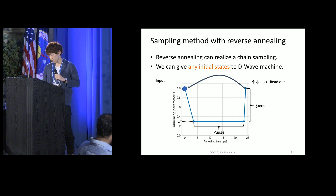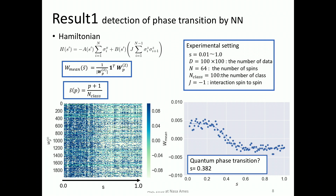This is the first result. This is the Hamiltonian we train on now. A(S) and B(S) are the energy scales of the machine. This is the new order parameter based on the neural network. We sample spin configurations from S equal 0.01 to 1.0, and we set the number of spins at 64. This is the visualization of the weight parameter. The horizontal axis denotes the annealing parameter S and the vertical axis denotes the weight parameter. We calculate this order parameter and fit it, obtaining the critical point at S equal 0.382.